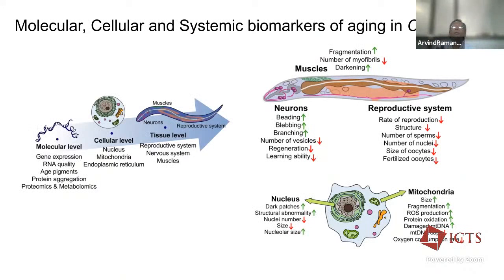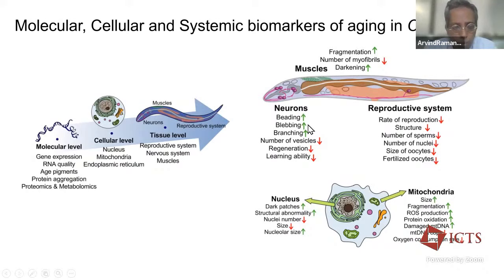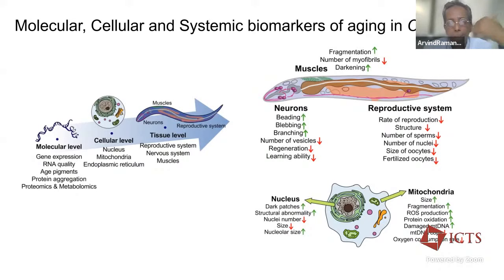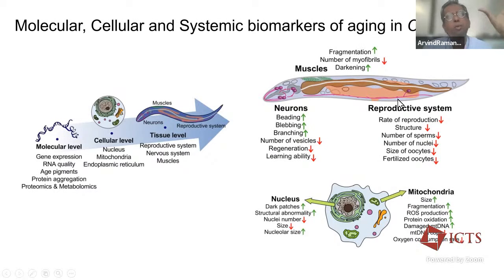To know how a worm has aged, there are numerous well-established biomarkers — molecular-level changes, cellular-level changes, and tissue-level changes. This includes older cells with high mitochondrial damage, high ROS, increases in nuclear size, along with changes in movement and muscle homeostasis. Remarkably, these changes are very similar to mammalian systems — there is essentially a loss of homeostasis as the organism ages.